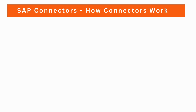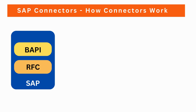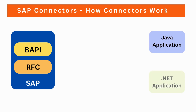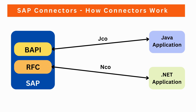Let's now see how connectors work. We have an SAP application which has wrapped application logic into a BAPI or RFC. We have an external application running on Java, and another application running on .NET. We can use the Java connector, simply JCO, to interact with the Java application, and we can use the .NET connector, in simple terms NCO, to connect to the .NET application.